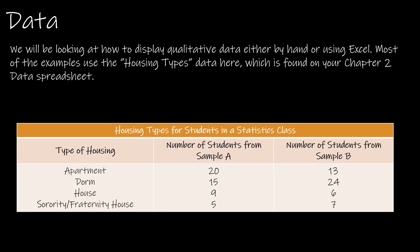For all of these questions we are going to look at the housing types data, found in the chapter 2 data spreadsheet which should be linked and easy for you to find.